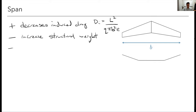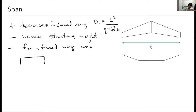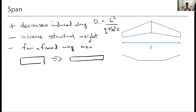Some other considerations: if I have a fixed wing area and I increase the span, the chords are going to shrink. That means smaller Reynolds numbers, which generally means more parasitic drag and possibly less maximum lift. Also, I have less volume inside the wing — in our case, maybe for storing electronics, but more generally, airplanes store fuel there. Having less volume to work with is generally a downside.